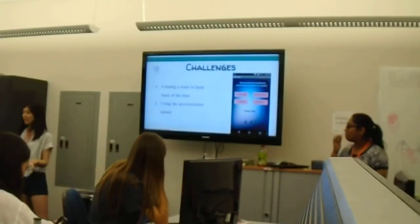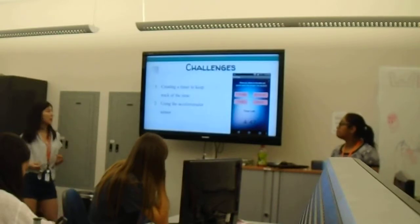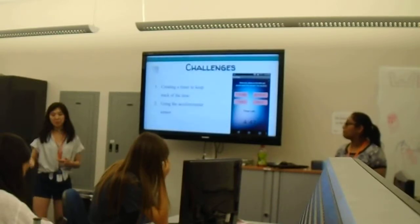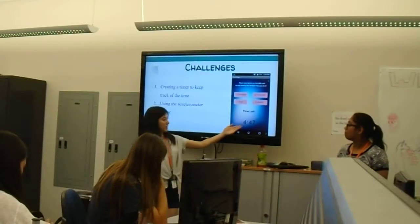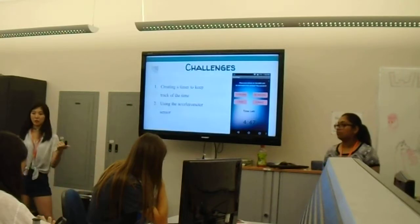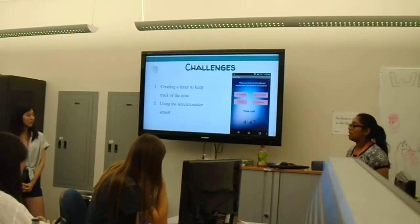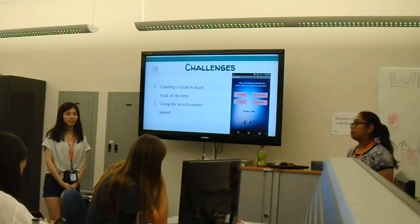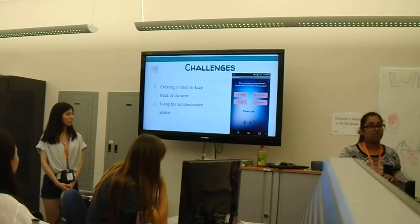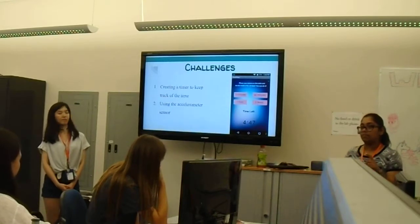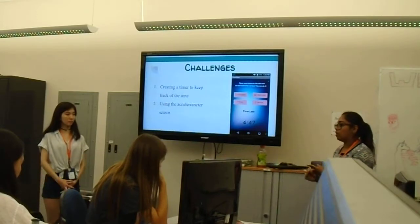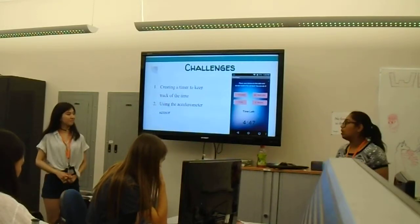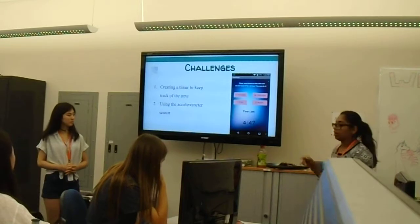We faced some challenges along the way. The two greatest ones: first, we tried to create a timer to keep track of the time, and we solved it by separating the minutes and the seconds part — we'll discuss that in detail in the code. Another challenge was the accelerometer sensor. It was hard to figure out the sensitivity of the phone, but we found that there was a setting in App Inventor with levels — weak, moderate, and sensitive — and we used that to overcome this challenge.